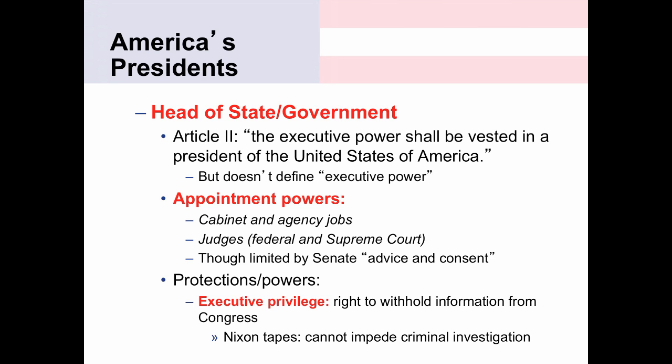President Nixon argued that fell under executive privilege—he did not have to hand over those tapes to Congress. The Supreme Court stepped in and ruled, forcing him to hand them over. However, the reason they forced him was that executive privilege cannot impede a criminal investigation. There was a criminal investigation going on regarding Watergate, and executive privilege did not cover that type of activity. In most other cases, though, the Supreme Court has upheld claims of executive privilege, giving the president wide latitude to withhold information from Congress, especially as it relates to national security.